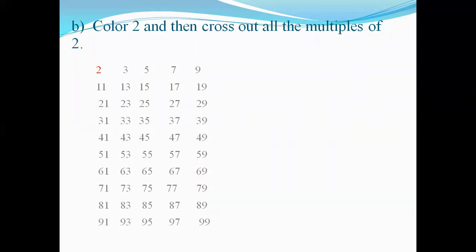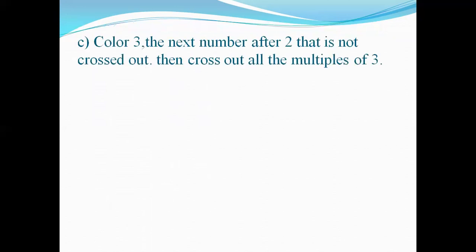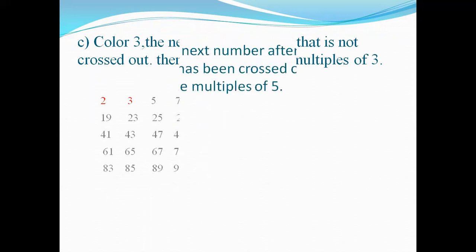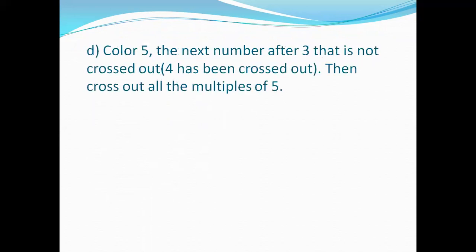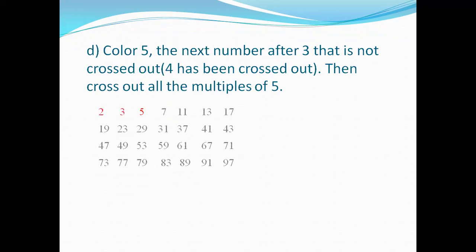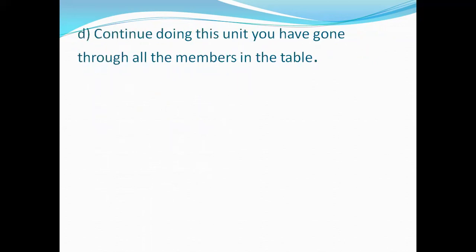The next step is to color 3, the next number after 2 that is not crossed out, and then cross out all the multiples of 3. We do the same with number 5, crossing out all its multiples. We continue this process until we have gone through all the numbers in the table.